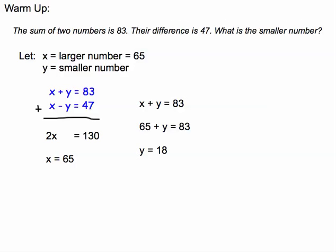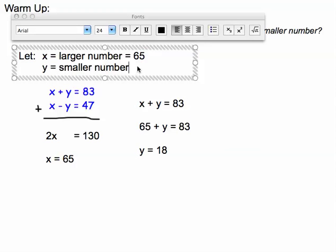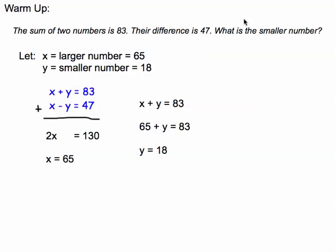That should be my smaller number, but before I confirm it's my answer, I should check very quickly. With word problems, you don't have to check algebraically—you could just do it using the problem given to you. First check: is the sum of two numbers 83? Does 65 plus 18 equal 83? Yes it does.